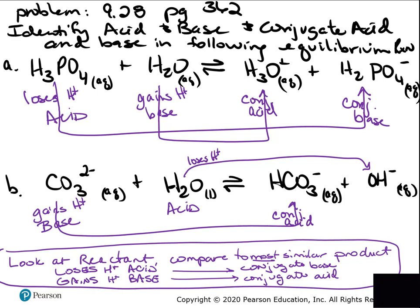That's how you identify conjugate acid-base pairs. When weak acids and bases react, they typically don't just form a salt and water — they form a conjugate acid and conjugate base that can then reverse and have a reverse reaction, reforming those products, so you end up with equilibrium.